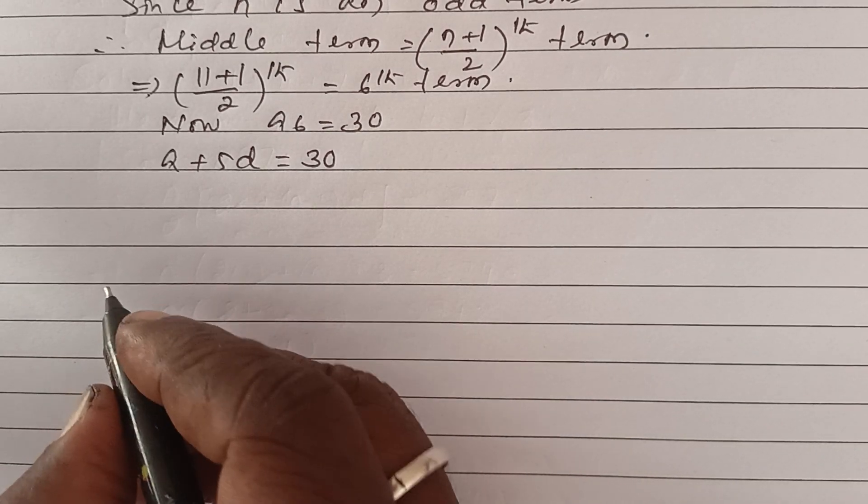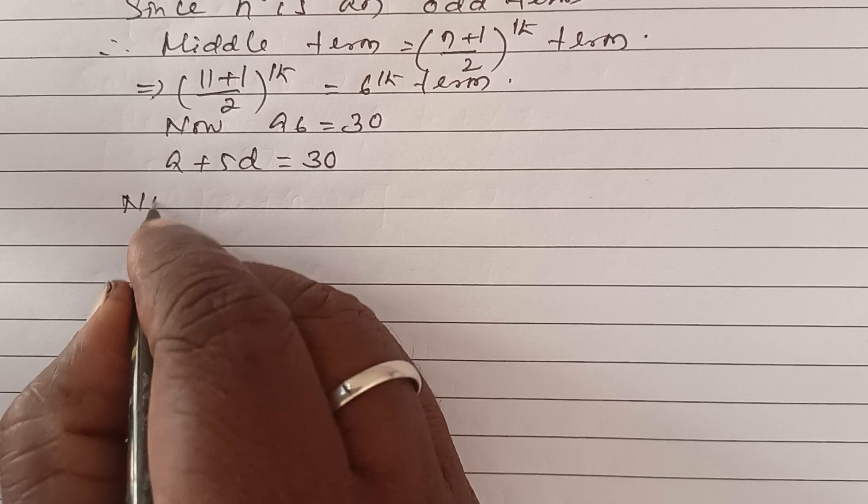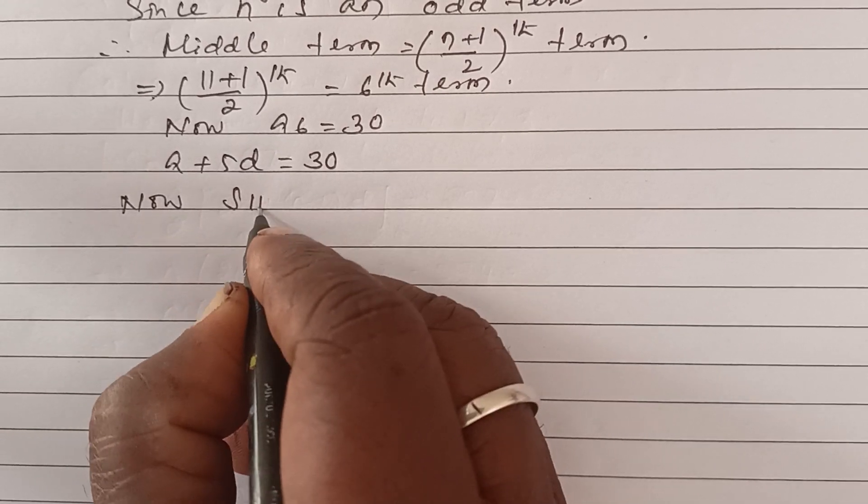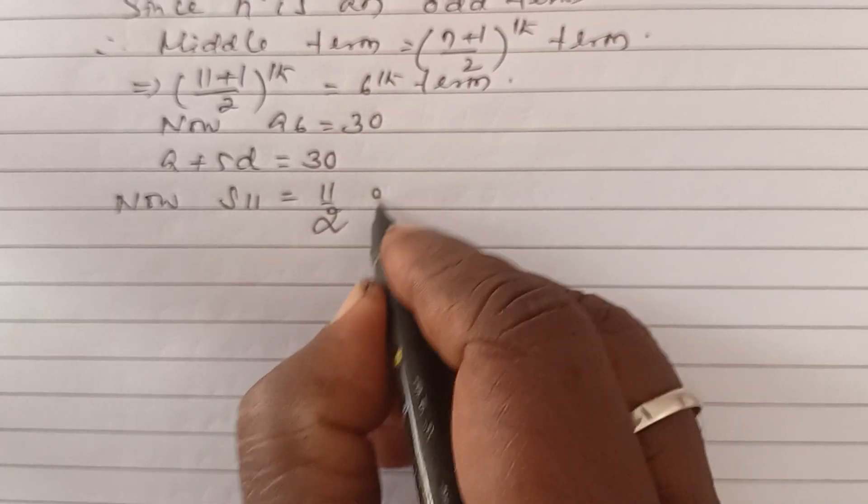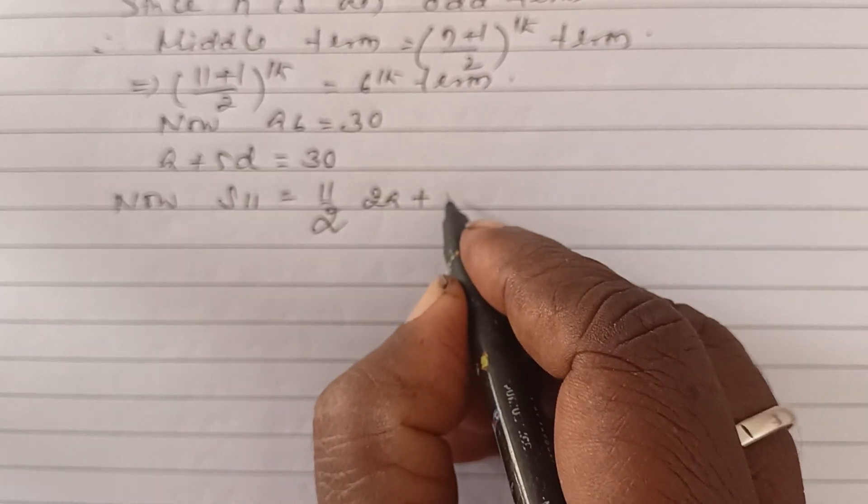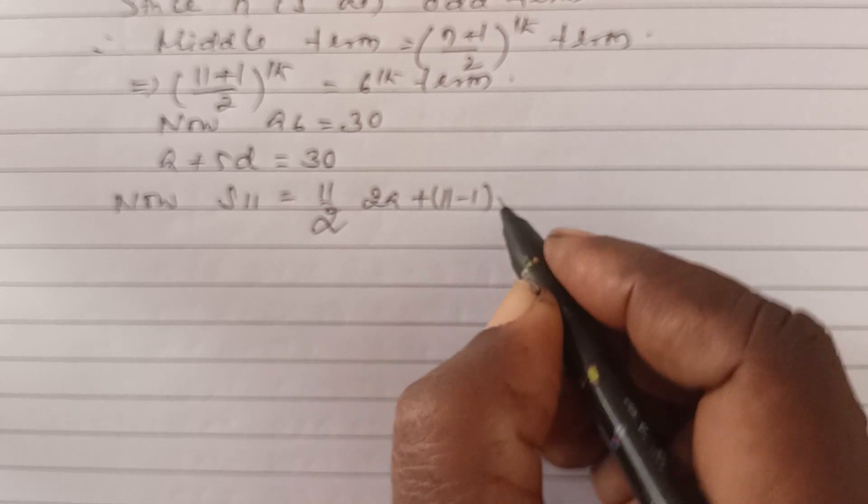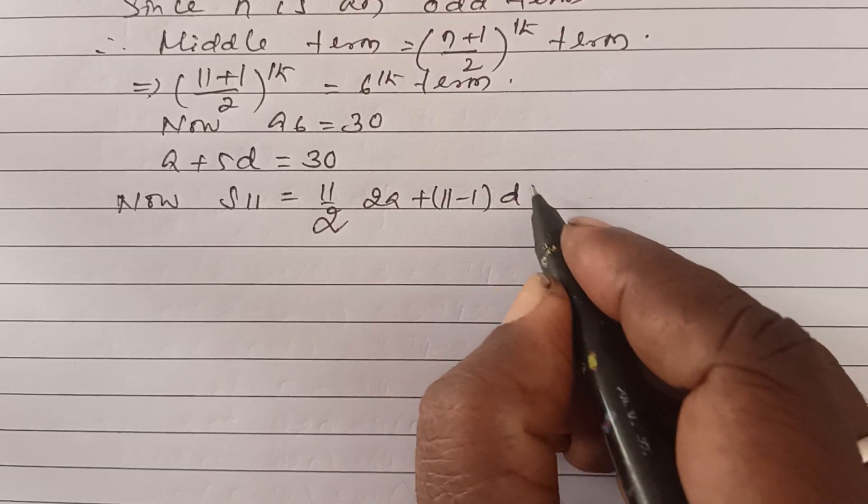Now S11 is equal to 11 by 2 times 2a plus 11 minus 1 into d.